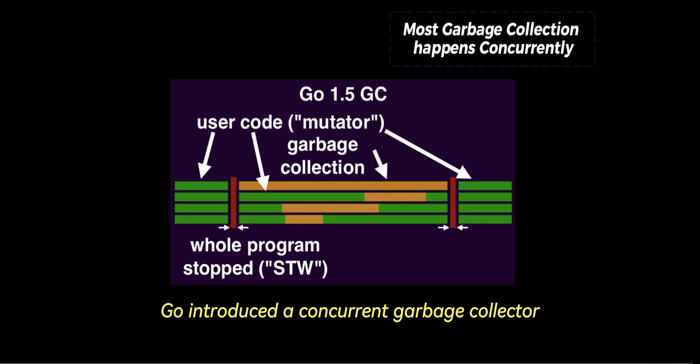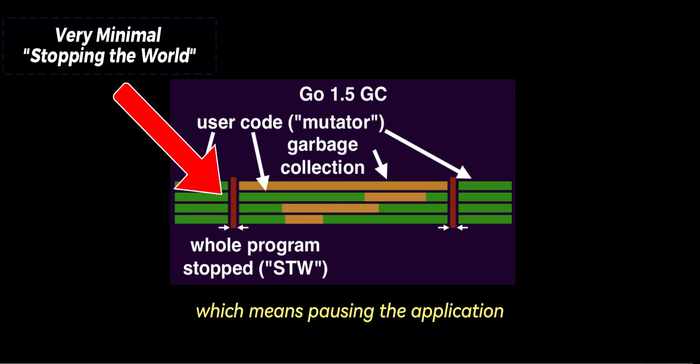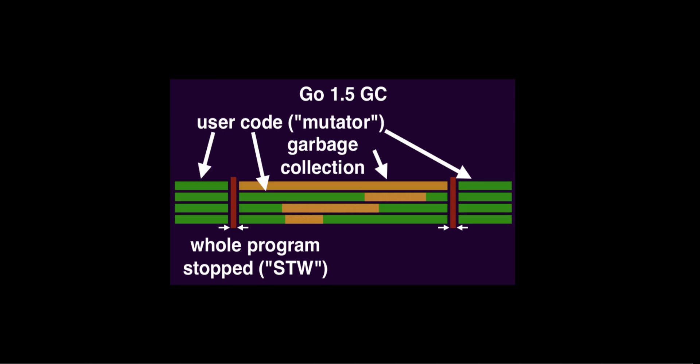Starting with Go 1.5, Go introduced a concurrent garbage collector. This means that the garbage collection process can run alongside the application instead of stopping the world, which means pausing the application. This results in much lower latency, making garbage collection operations almost unnoticeable for most applications.